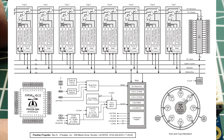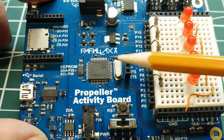Each one can run its own program or task independently, so there's no need for interrupts. Each microcontroller is called a COG — like a gear in a machine — and they're numbered COG 0 to 7, so we have 8 COGs internally in the Propeller chip.